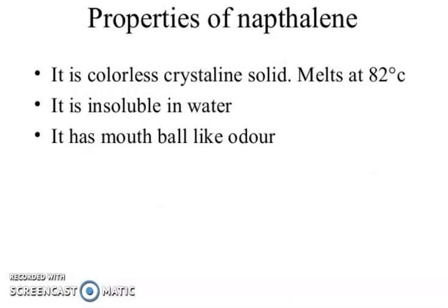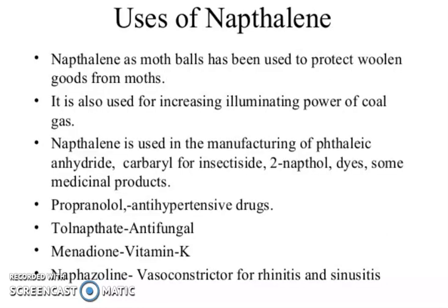Properties of naphthalene: it is a colorless crystalline solid, melting at 82°C, insoluble in water, with a mothball-like odor. Uses of naphthalene: as mothballs to protect woolen goods from moths; increasing the illuminating power of coal gas; manufacture of phthalic anhydride, carbide for insecticide, 2-naphthol, dyes, and medicinal products — including propranolol (anti-hypertensive), tolnaftate (anti-fungal), menadione (vitamin K), naphazoline (vasoconstrictor for rhinitis and sinusitis).